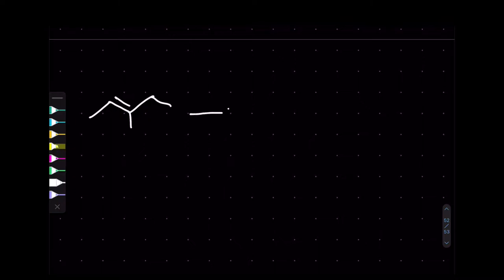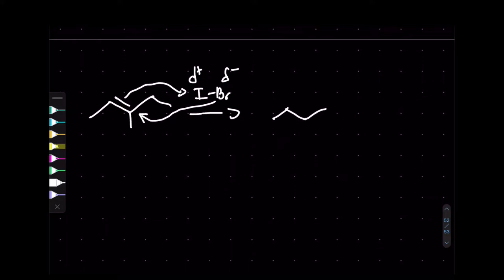IBr is pretty interesting because due to the weak electronegativity of iodine, iodine has more of a delta-plus while bromine has a delta-negative. Essentially it does the same thing as HBr — it first grabs the iodine, and then bromine attacks the most substituted position, producing the product.